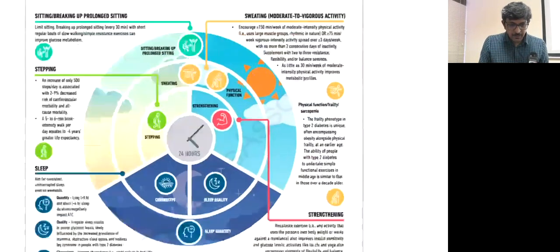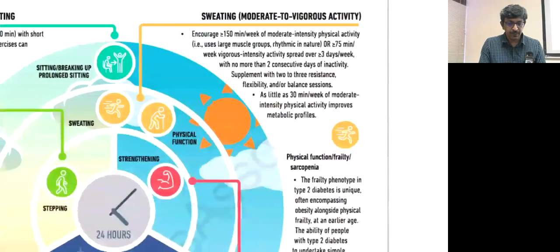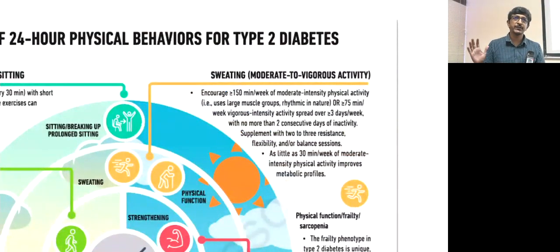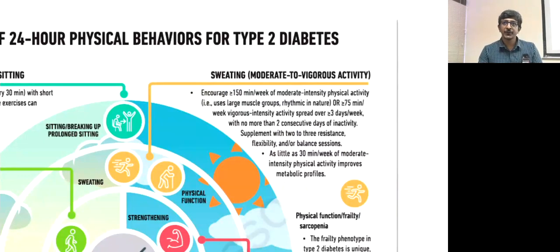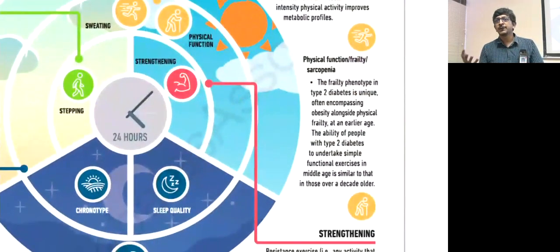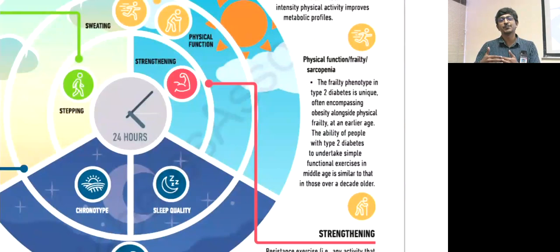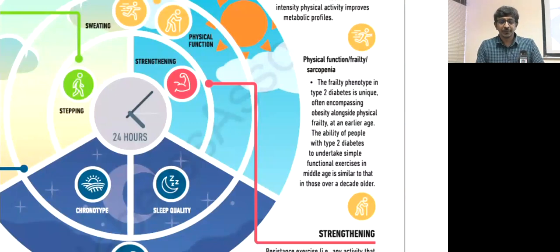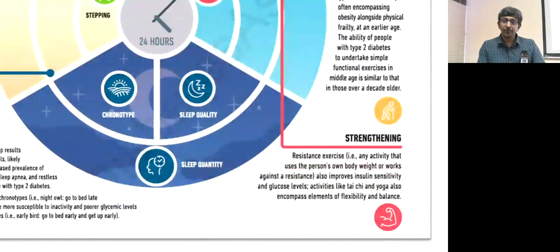Regarding physical activity, ensure at least 150 minutes per week of moderate-intensity activity, or 75 minutes of vigorous activity per week. There is significant physical frailty associated with diabetes — patients feel physically frailer by about 10 years compared to those without diabetes in terms of energy, strength, and motivation. Focus on resistance and strengthening exercises. Tai Chi and yoga have also been shown to be beneficial in diabetes.